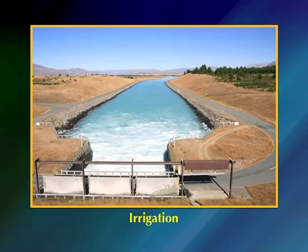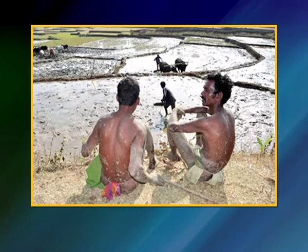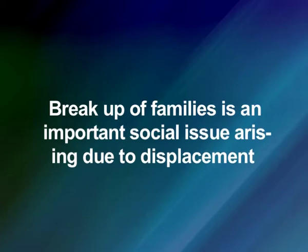Unfortunately, ousting of people likely to be submerged under irrigation or hydel power dams is a classic case where hardships are imposed on people in spite of pro-people laws and policies proclaimed by the government. The major issues related to displacement and rehabilitation are: tribals are usually the most affected among the displaced, who are already poor. Displacement further increases their poverty due to loss of land, home, jobs, food insecurity, loss of access to common property assets, increased morbidity and mortality, and social isolation. Breakup of families is an important social issue arising from displacement, in which women are the worst affected and are not even given cash or land compensation.